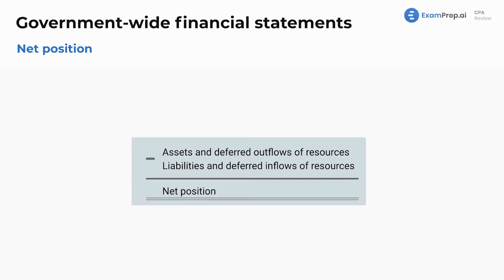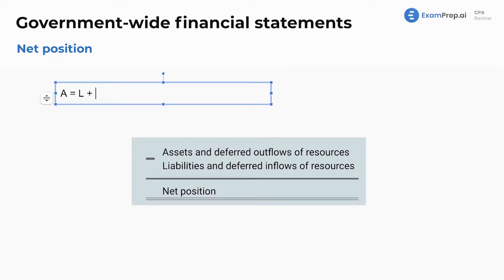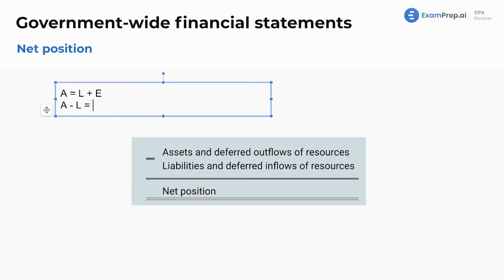The net position in a government — we talked about this before. Our accounting formula is assets equals liabilities plus equity. Since not-for-profits and governments don't have equity, we can rewrite the equation to say assets minus liabilities equals equity. Equity can also be called net assets. We need to call it net assets here because there's no owners of the government. Net assets is our term, and that's how we get our net position in the statement of net position.